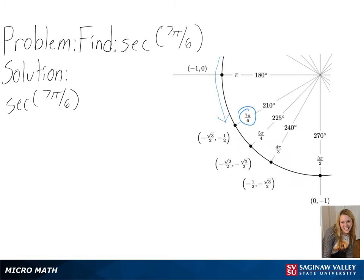Since we are finding the secant value, we will need to find 1 over the cosine value, or 1 over the x value, since that will give us our secant value.